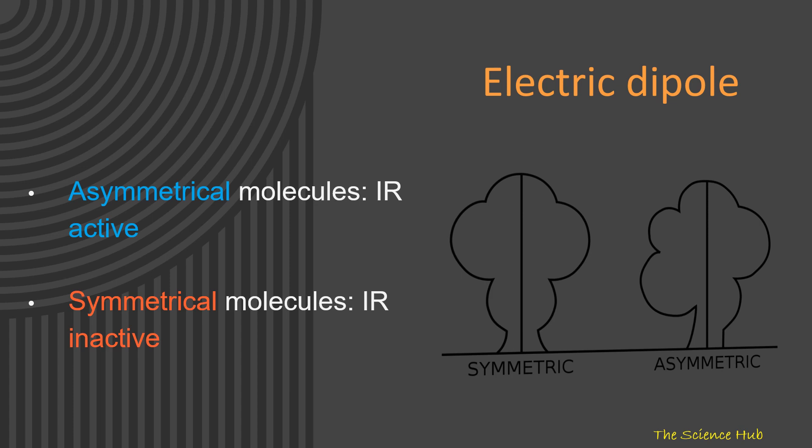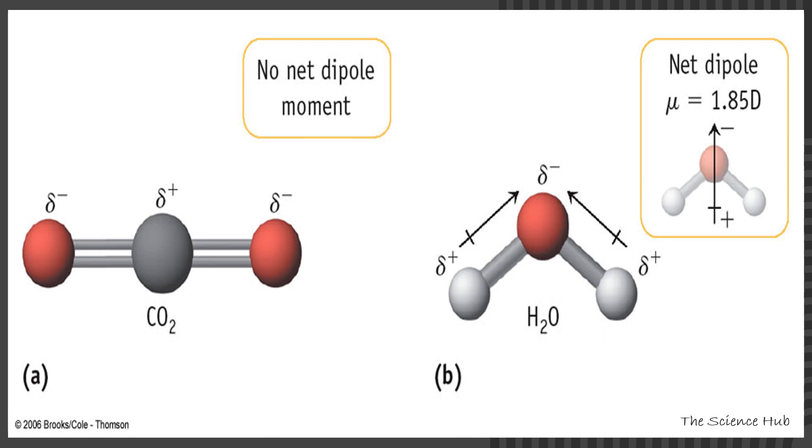Now we come to electric dipole. A sample having an electric dipole can only vibrate in IR, so it is a basic requirement in IR spectroscopy. Asymmetrical molecules are IR active and symmetric molecules are IR inactive. In CO2, dipole moment is 0, so it is IR inactive. In H2O, dipole moment is 1.85, so it is IR active.